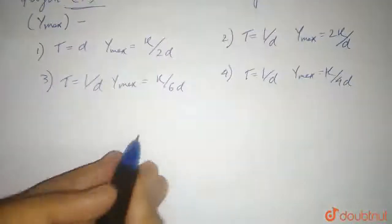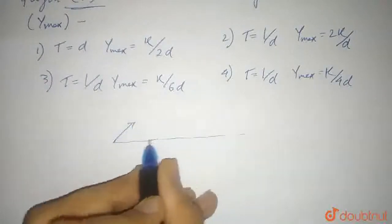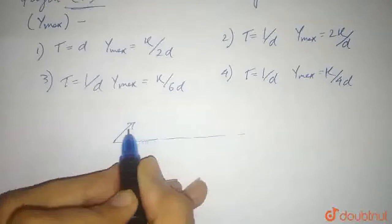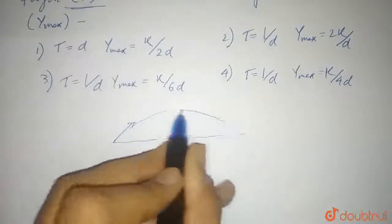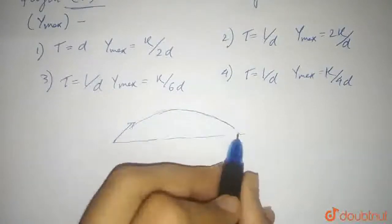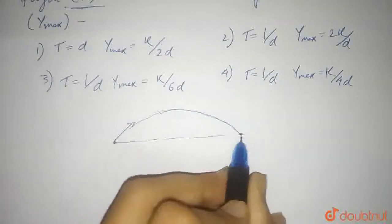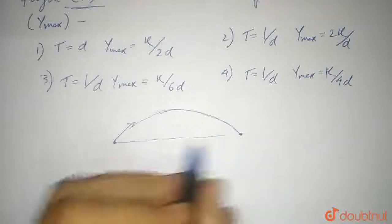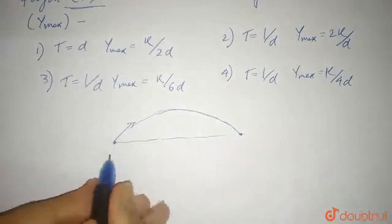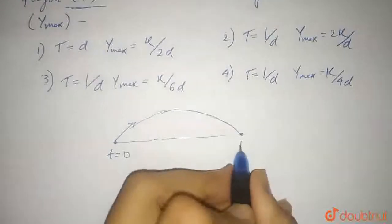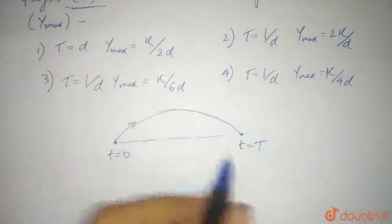When we throw the projectile from the ground at a particular angle with the horizontal, when the projectile reaches the original position, the vertical displacement y is the same as the initial value. At initial time t = 0, and at time t = capital T (the time of flight), the vertical displacement y is the same — that is, zero.